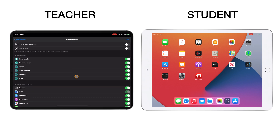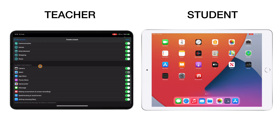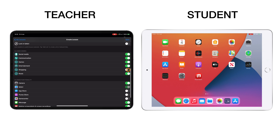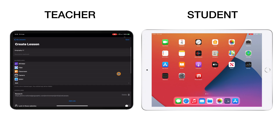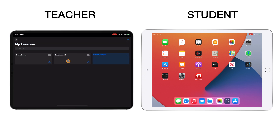I can also lock students into specific websites or just into Safari, though I'm not going to do that here. There are other things you can allow in terms of general device functionality. I don't need them going to the App Store, iTunes, or Game Center. I'll leave Messages open, and definitely want them to be able to make screenshots and recordings. Spell checking and autocorrect are useful, as is AirDropping files. I'll turn off entertainment, games, and shopping — not essential. That's the lesson structure from a tech point of view sorted. I'll tap Save, and that is now a created lesson.